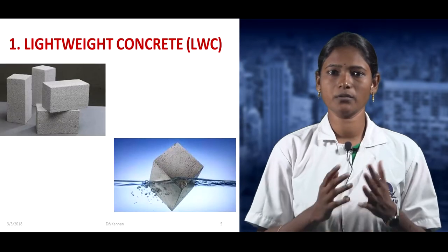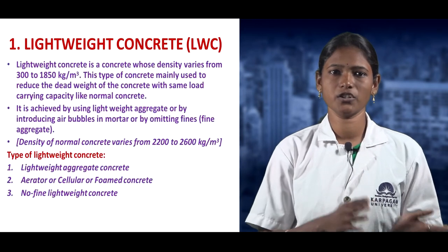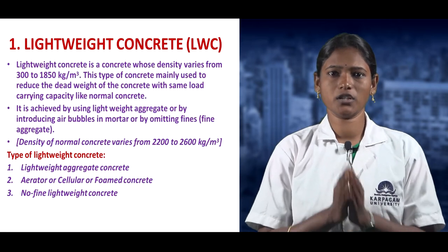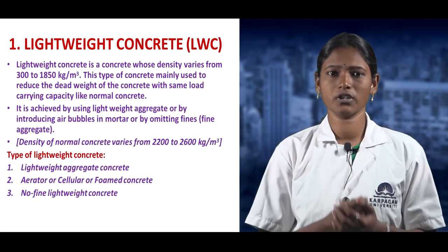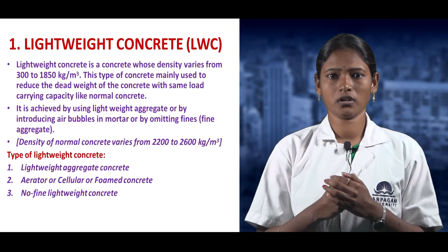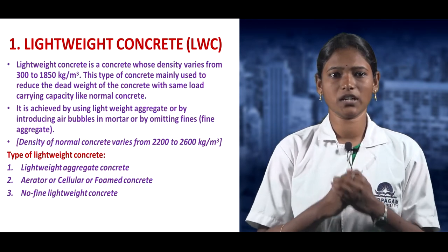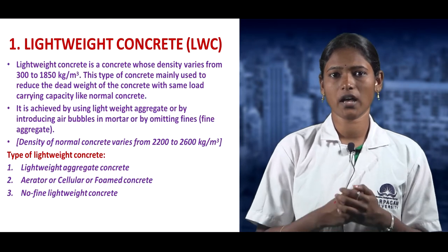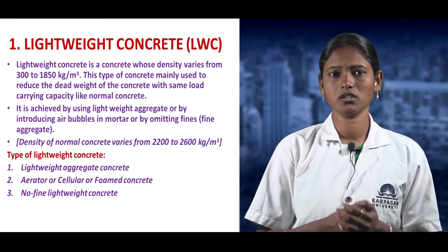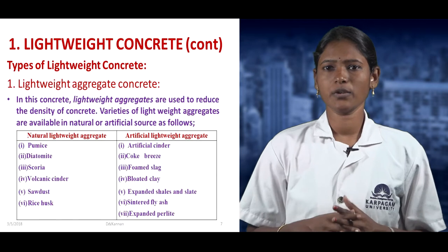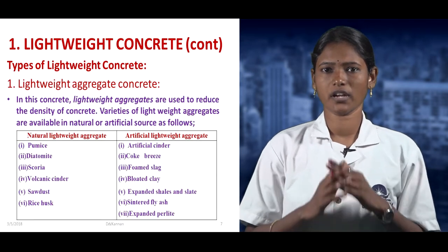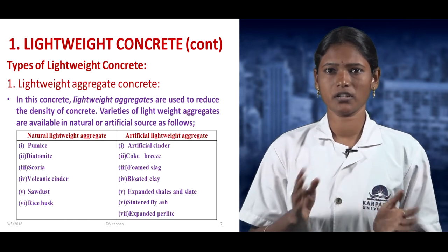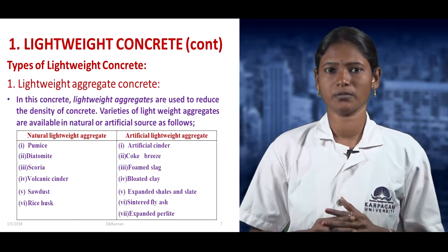The first type is lightweight concrete. The density of lightweight concrete varies from 300 to 1050 kg/m³. It is mainly used to reduce the dead load, that is the self-weight of the concrete. It is achieved by three types: lightweight aggregate concrete, aerated or cellular concrete, and no-fines concrete.